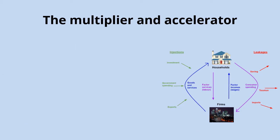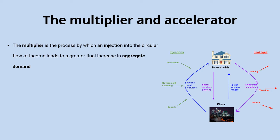Linked to the circular flow of income are the concepts of the multiplier and the accelerator effect. The multiplier is the process by which an injection into the circular flow results in a greater final increase in aggregate demand. The reason for that is that one person's expenditure is another's income. So if I get a £500 boost to my income, I might buy a new suit. The tailor gets a boost they wouldn't otherwise have had, so he goes out and buys a new TV. The TV salesman gets a boost to their income, and so on through the economy.